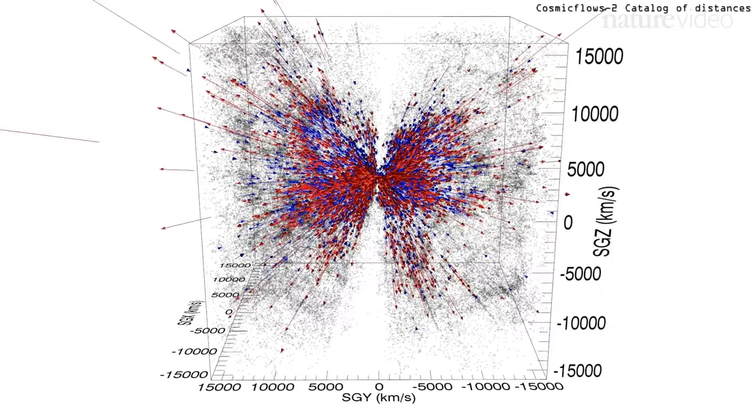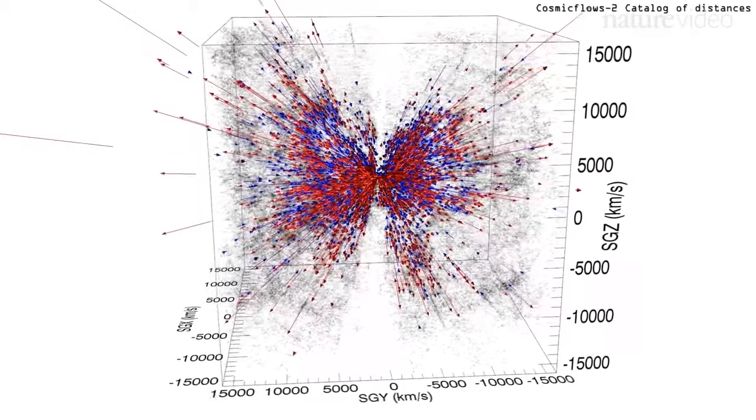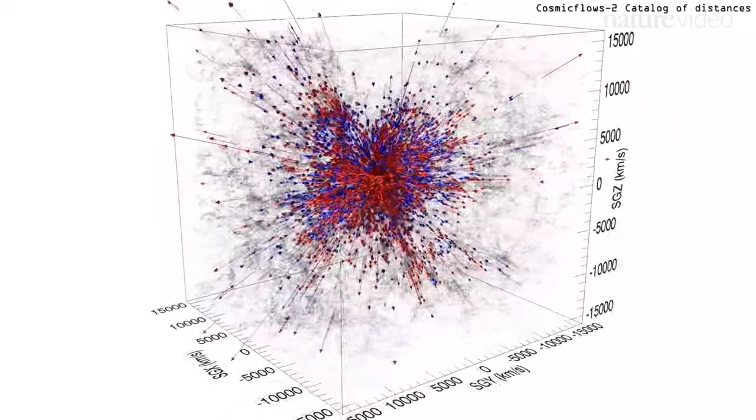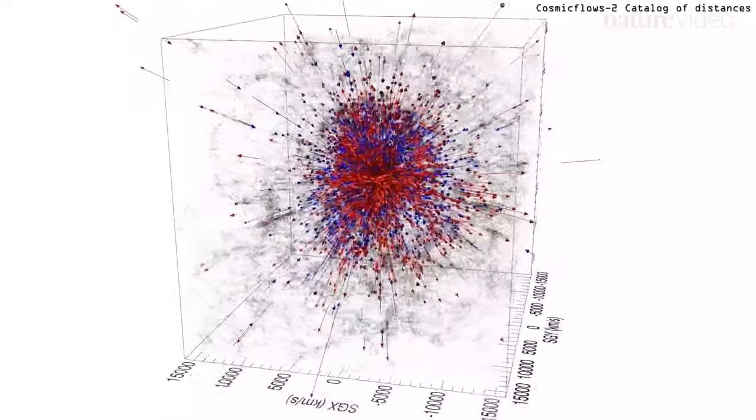They used this data to identify which galaxies are moving towards us, shown in blue, and which galaxies are moving away from us, shown in red.